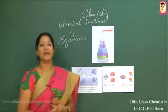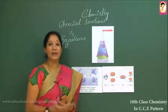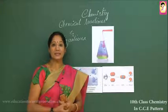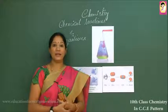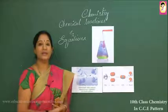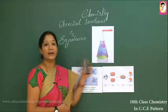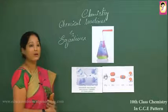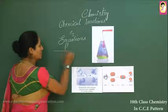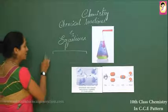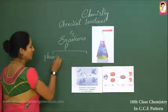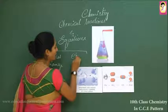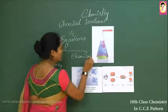Changes taking place in our daily life include things like the growth of a plant or a tree, the curdling of milk, or sunrise and sunset. All these changes are categorized into two types: one is a physical change and the other is a chemical change.